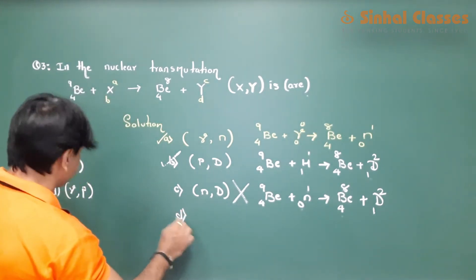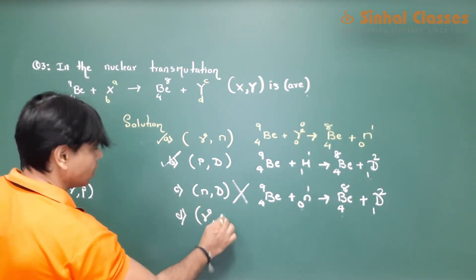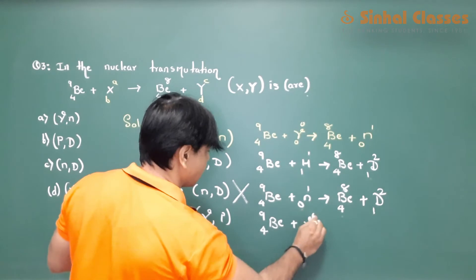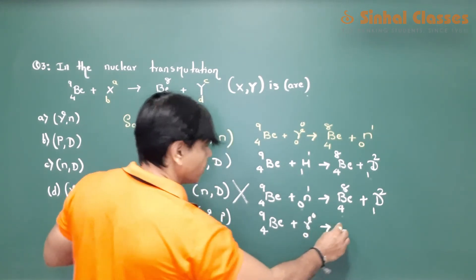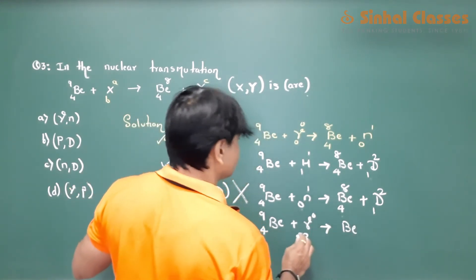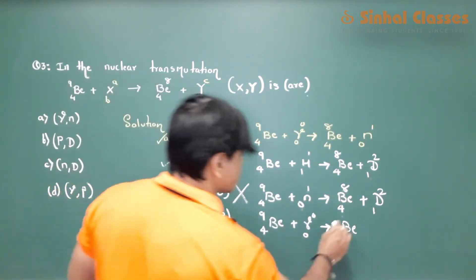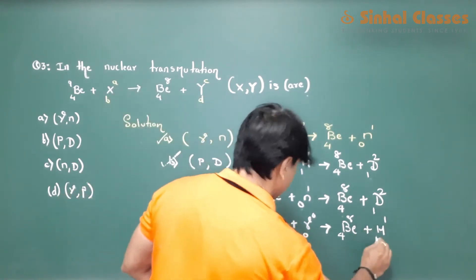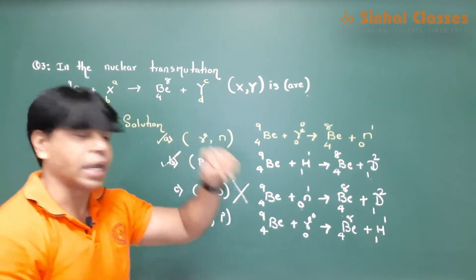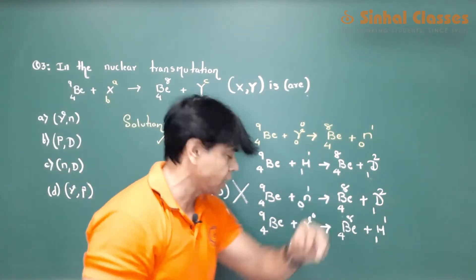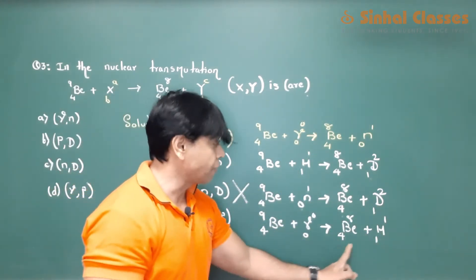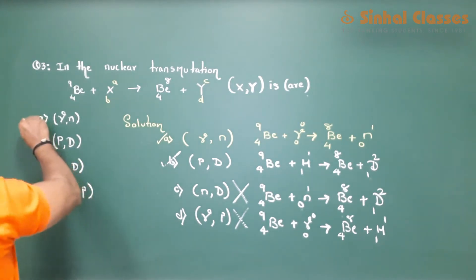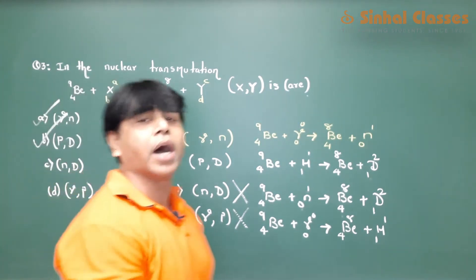For option C with deuteron: mass numbers check out at 10 each, but atomic number gives 4 plus 0 equals 4 on the left and 4 plus 1 equals 5 on the right, so this cannot be the answer. Similarly for option D with gamma and proton, the atomic numbers don't balance. So the answer for this question is both A and B — both are correct.